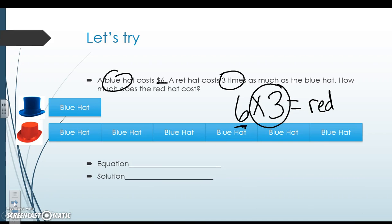So I would do the blue hat six more times, right? So the blue hat six more times to get to the red hat. So I have six times three is my equation. We know that six times three is 18. So solution is $18 for that red hat.